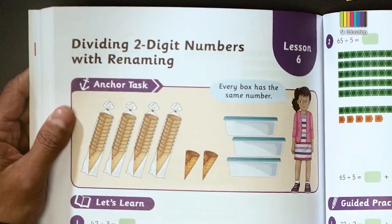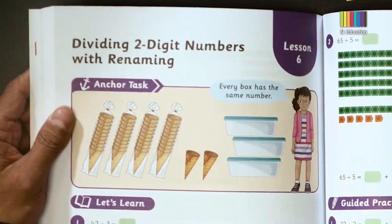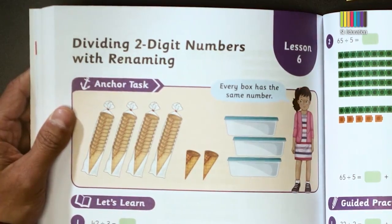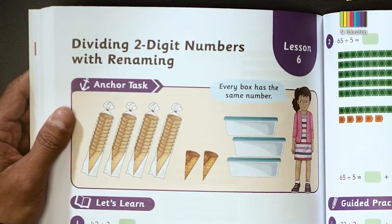There are different types of journals. In a lesson where the anchor task is to put 42 ice cream cones into three containers such that every container has the same number of ice cream cones.